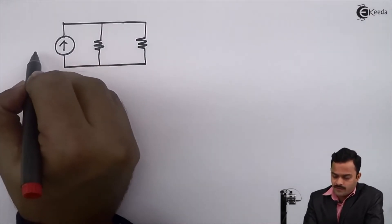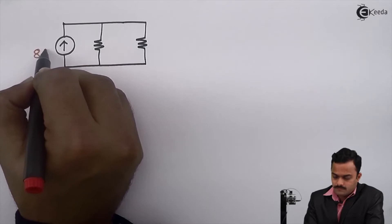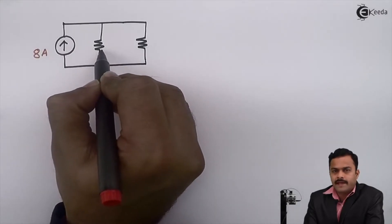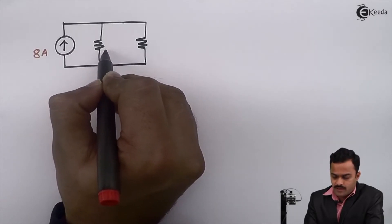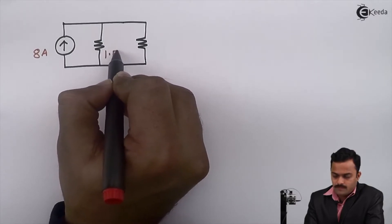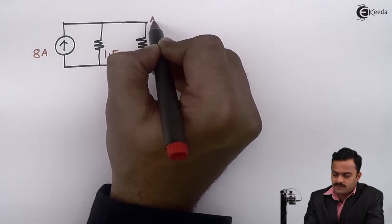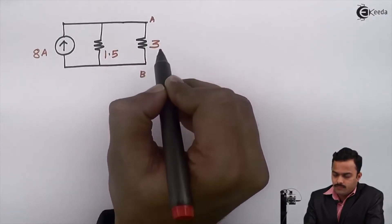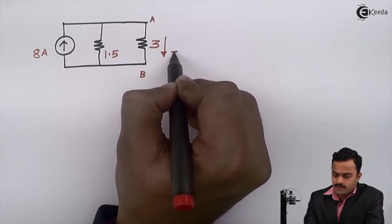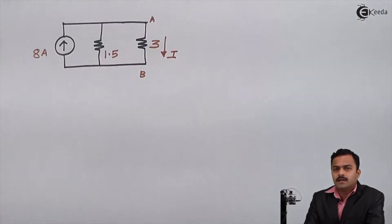This current source will have the value 8 ampere, this equivalent resistance will be 1.5 ohm, and 3 ohm I have not touched because I want to find this current I.